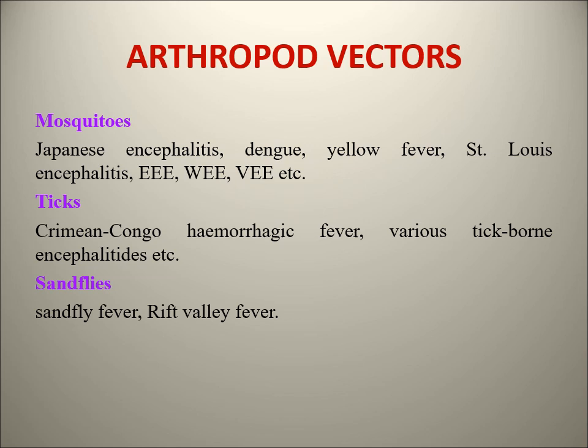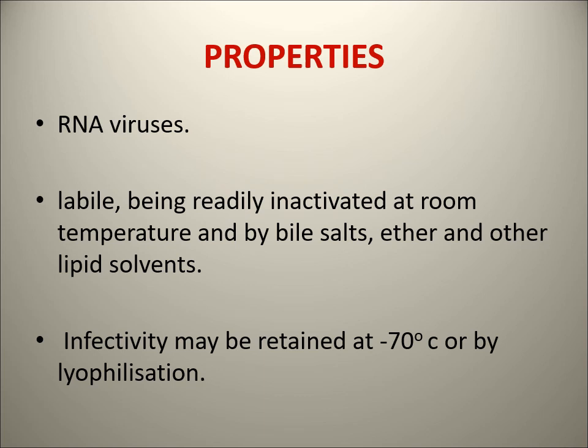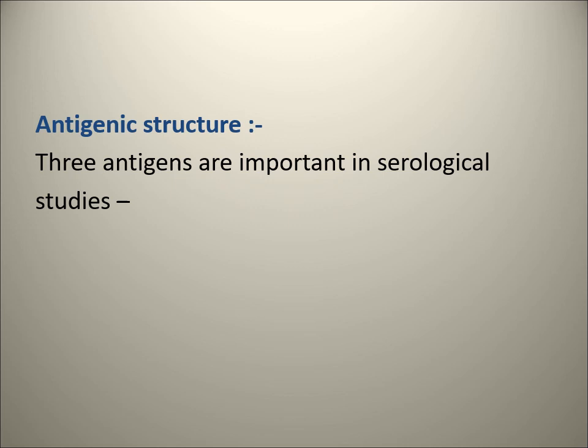Properties of arboviruses: they are all RNA viruses and they are labile, being readily inactivated at room temperature by bile salts. For antigenic structure, three important antigens are present: hemagglutinin, complement-fixing, and neutralizing antigens.